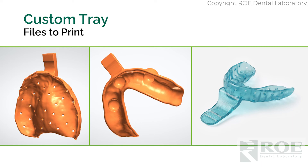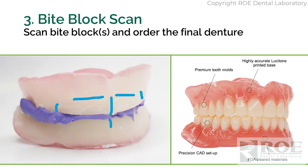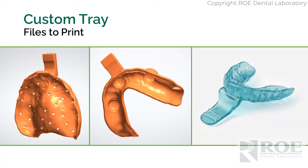There is an option that leads right into the third option: rather than just making a custom tray, we can make a base plate with a bite rim. That base plate would be printed using normal averages for a bite block. When you receive it, this would be a wash impression situation every time — a border-molded wash impression — just following regular techniques. Then you go right into bite block adjustment, bite registration, and markings.